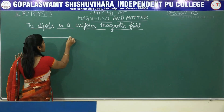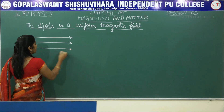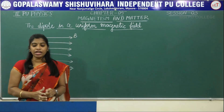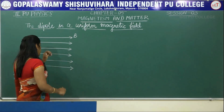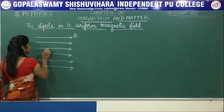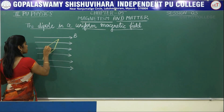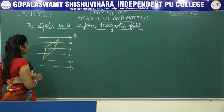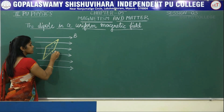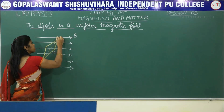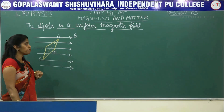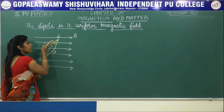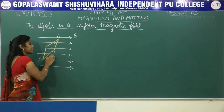Let me consider the external magnetic field B. In this magnetic field I am going to place a bar magnet or a magnetic needle. This magnetic needle is placed in an external magnetic field and it is making an angle theta with the magnetic field. This is the north pole and this is the south pole of the magnetic needle.